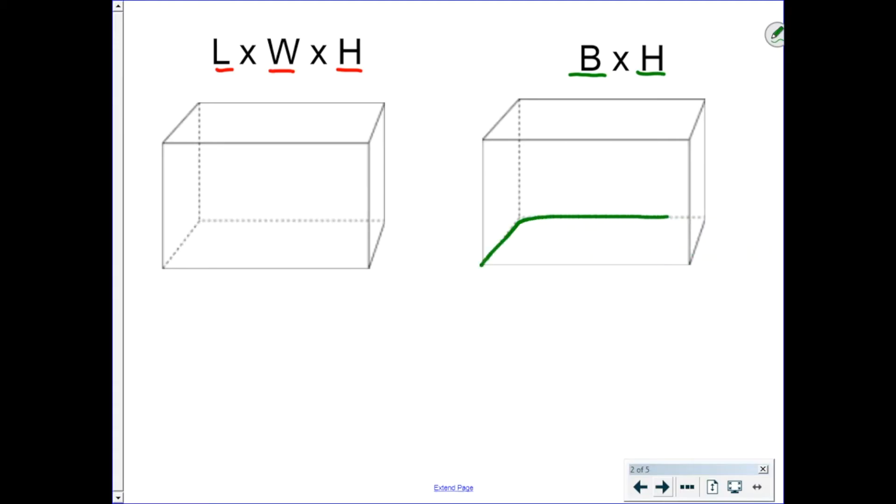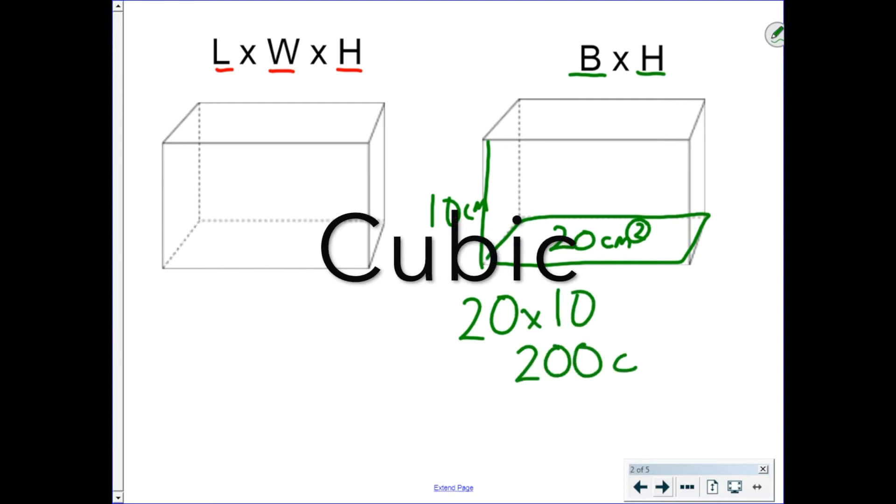So let's do an example. Let's say the area of the base was 20 centimeters squared. I know that's area because of the two. That indicates that squared, which is how area is measured. And the height, let's say, is 10 centimeters. Very simply put, it's 20, which is the area of the base, times 10, or 200 cubic centimeters.